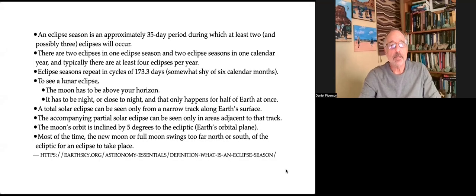An eclipse season is an approximately 35-day period during which at least two, possibly three, eclipses will occur. There are two eclipses in one eclipse season and two eclipse seasons in one calendar year, and typically there are at least four eclipses per year. Eclipse seasons repeat in cycles of 103.3 days, which is somewhat shy of six calendar months.